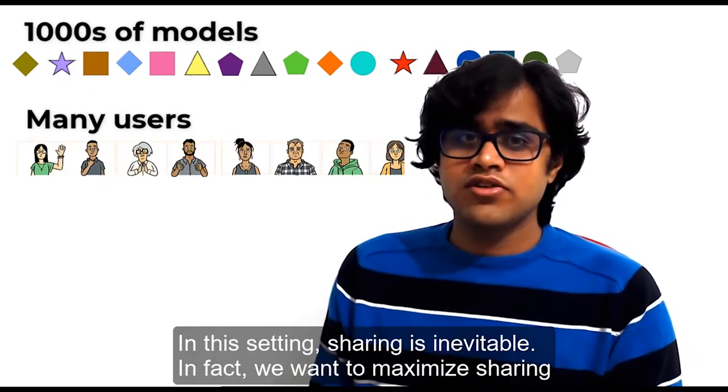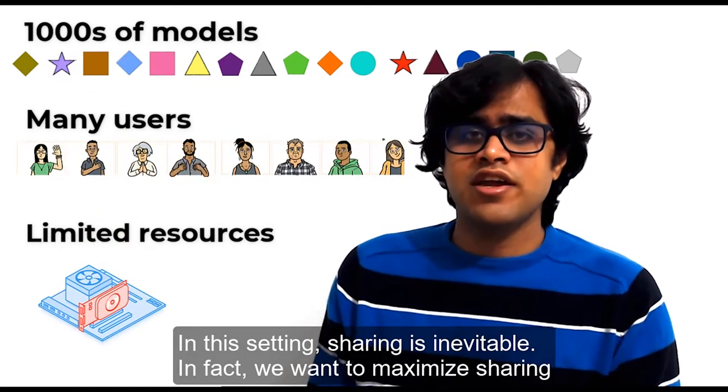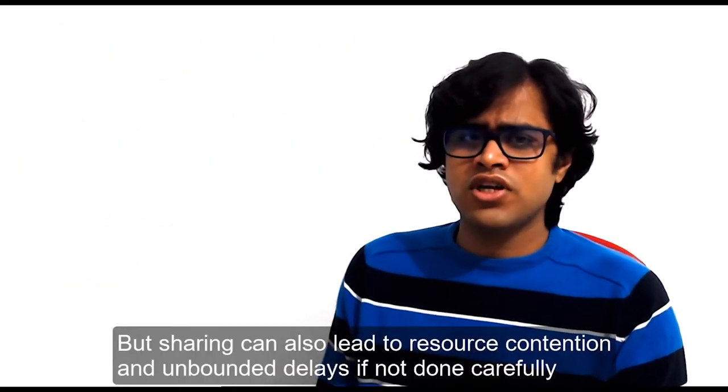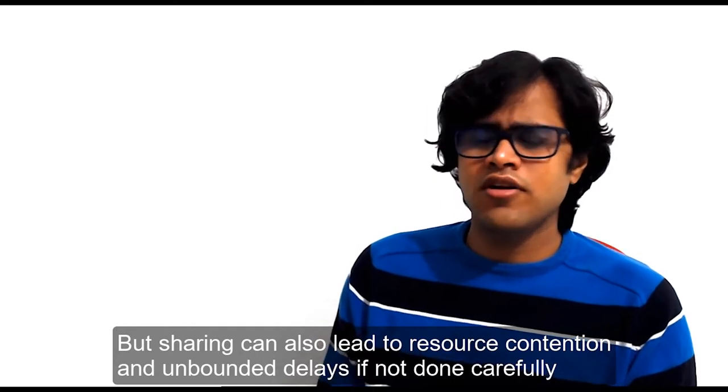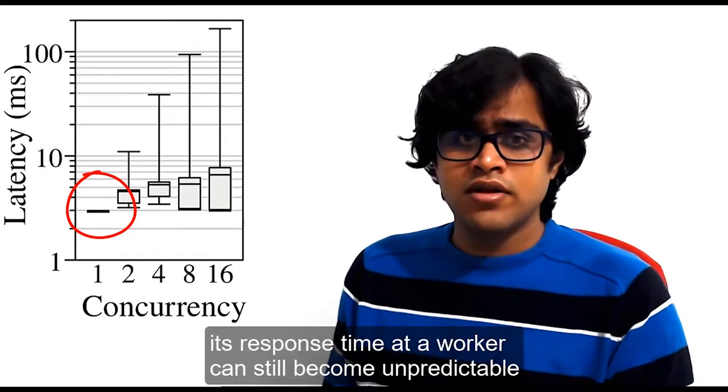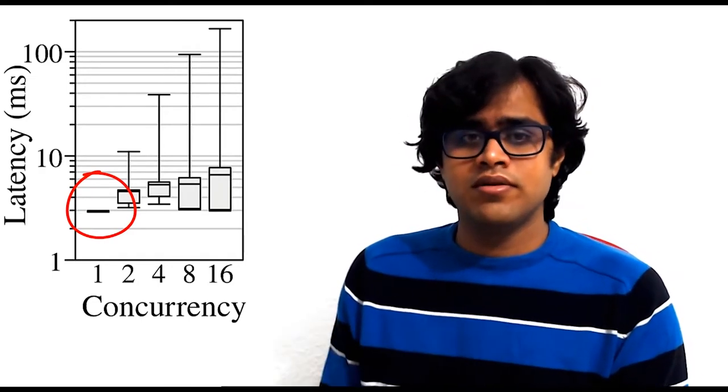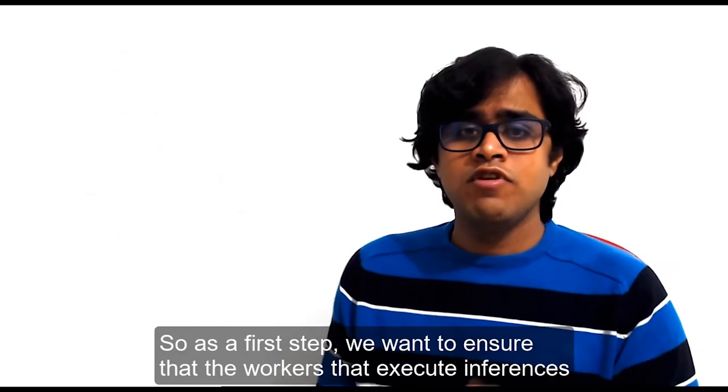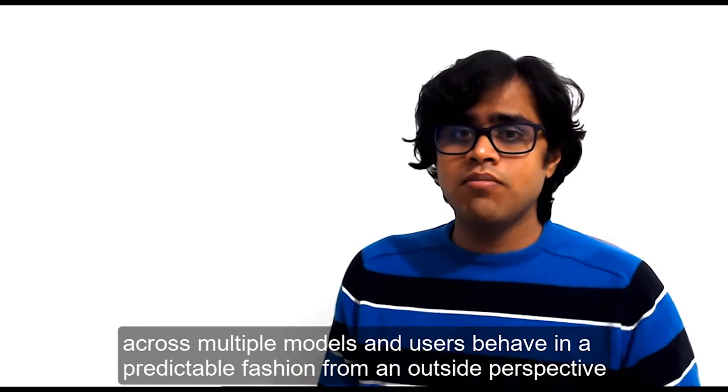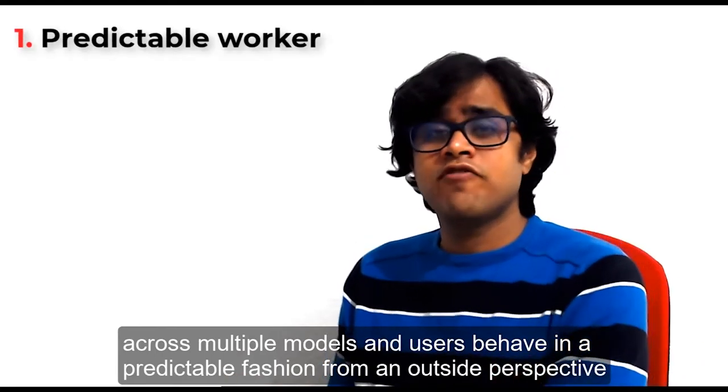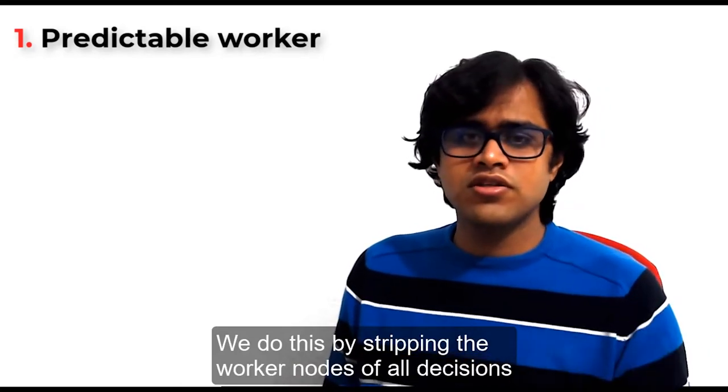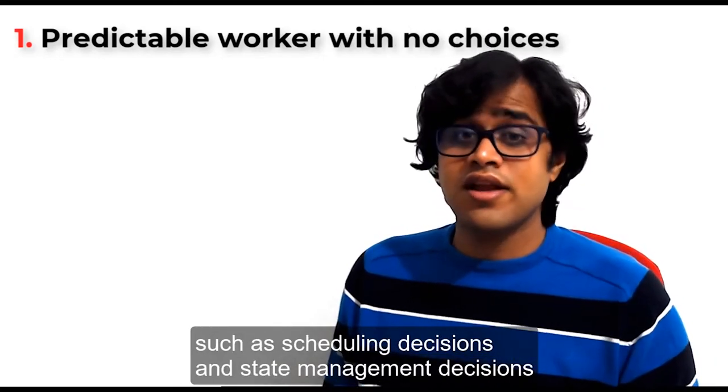Recall first that our goal is to not just serve one model but thousands of models across many different users. In this setting, sharing is inevitable. In fact, we want to maximize sharing because GPUs are expensive. But sharing can also lead to resource contention and unbounded delays if not done carefully. Even though a single DNN inference executes in a predictable fashion, its response time at a worker can still become unpredictable. So as a first step, we want to ensure that the workers that execute inferences across multiple models and users behave in a predictable fashion from an outside perspective. We do this by stripping the worker nodes of all decisions, such as scheduling decisions and state management decisions.